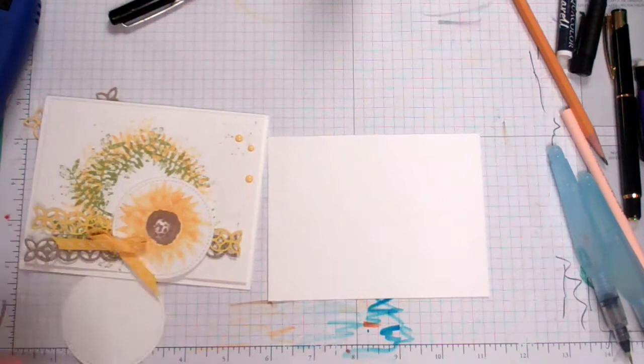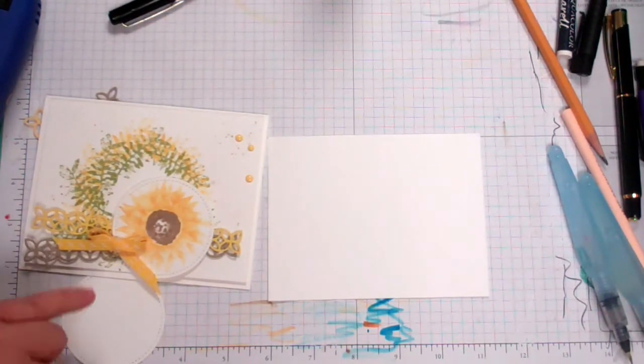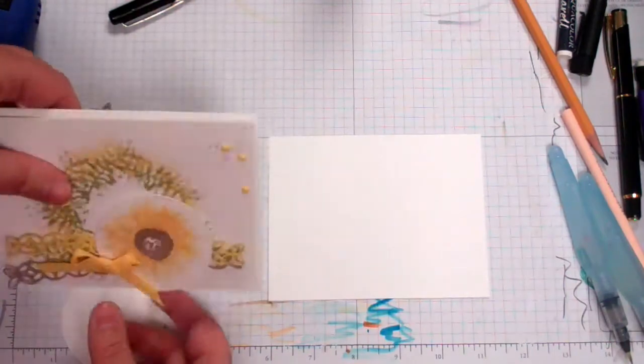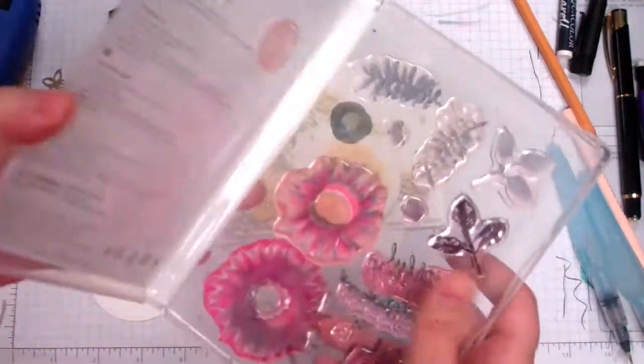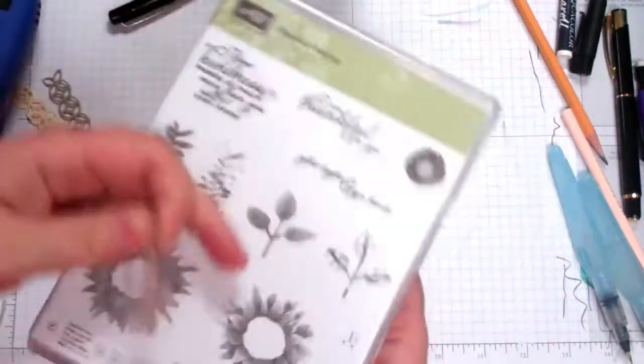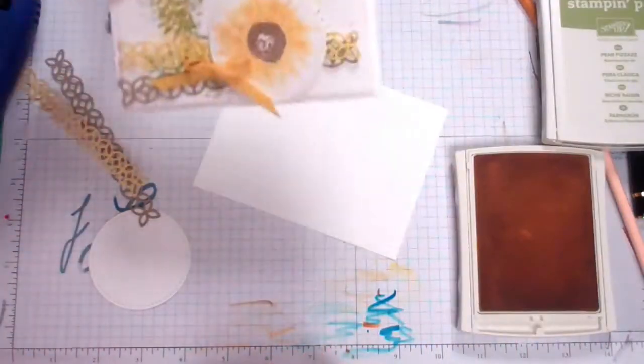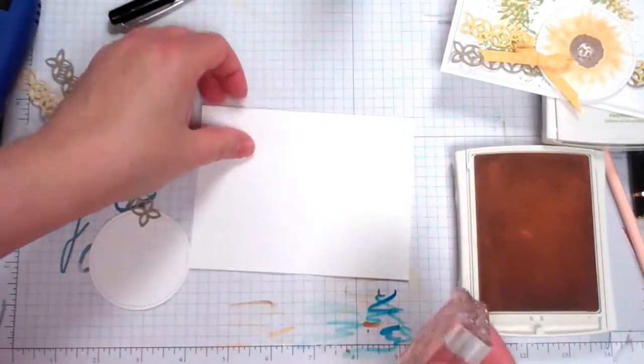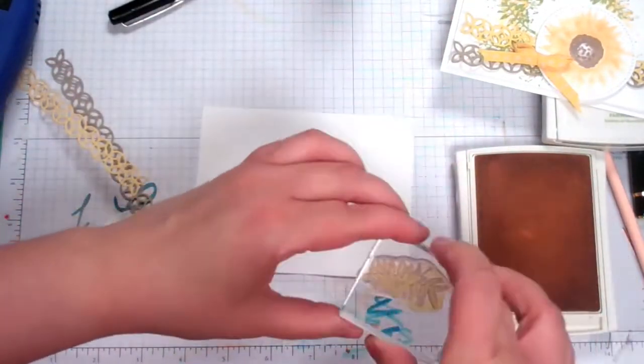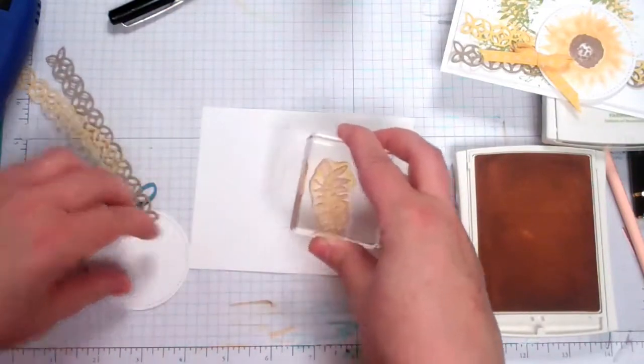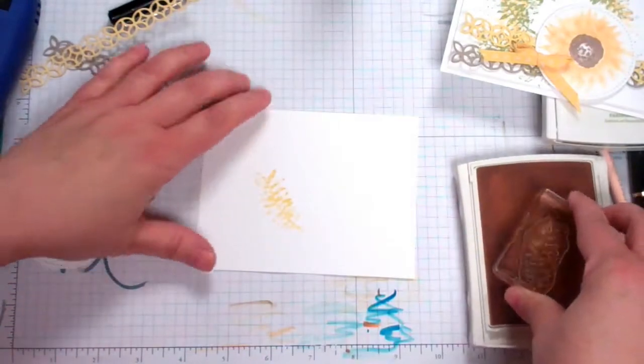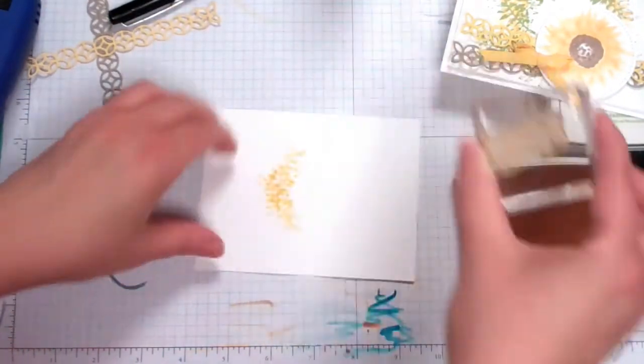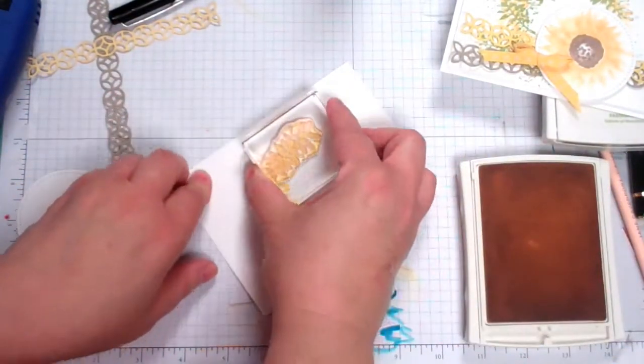We're going to need Daffodil Delight, Old Olive or Pear Pizzazz, and we have our Crumb Cake pieces and so forth. We need this watercolory one here, so I'm going to go ahead and grab that out. Basically, I'm going to keep this here as a guide. We're going to go around a circle-ish. This is going to kind of be here, so we want to just kind of layer and turn.